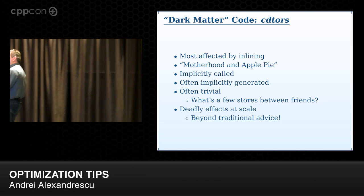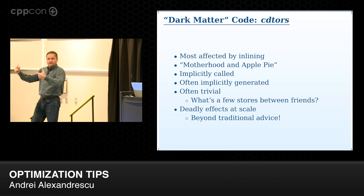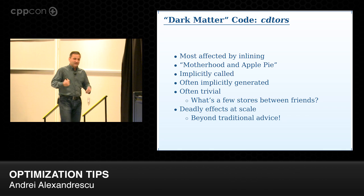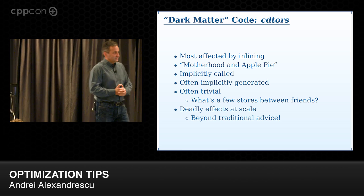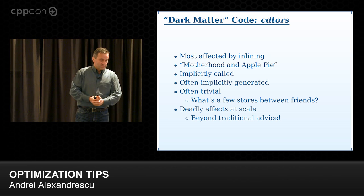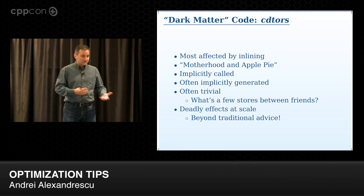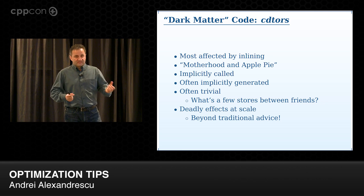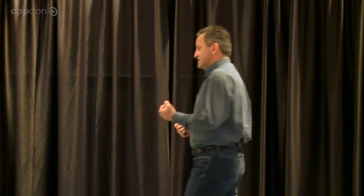There's a lot of fat in between the lines of your code — code between code between code — and that has really bad effects at scale. The traditional advice is: don't over-copy objects, use rvalue references, pass by reference. But it's not only that. Nobody advises you not to write destructors. However, these destructors, once present and inlined, increase your code size, sometimes considerably.